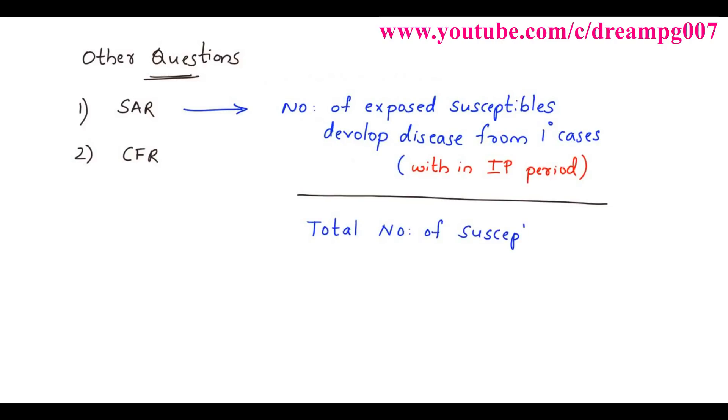In this question, the number of primary cases is 2. Total number of students is 100. Two cases already occurred, therefore number of susceptibles is 100 minus 2 equals 98. Incubation period of diphtheria is 2 to 6 days.